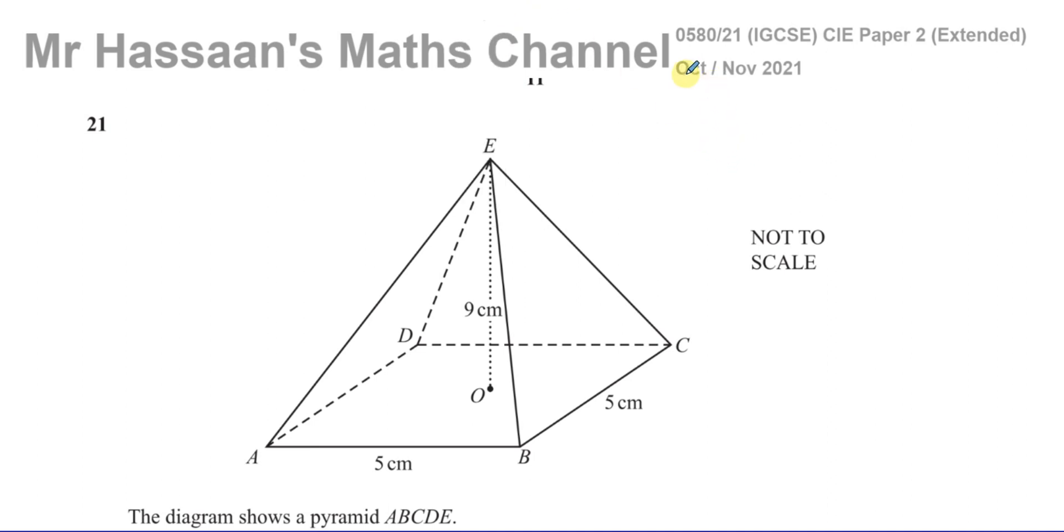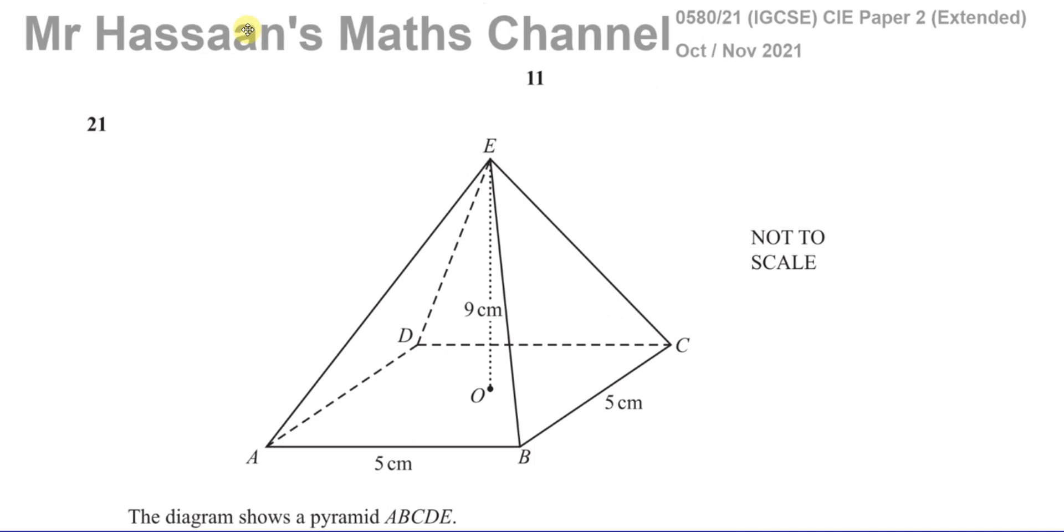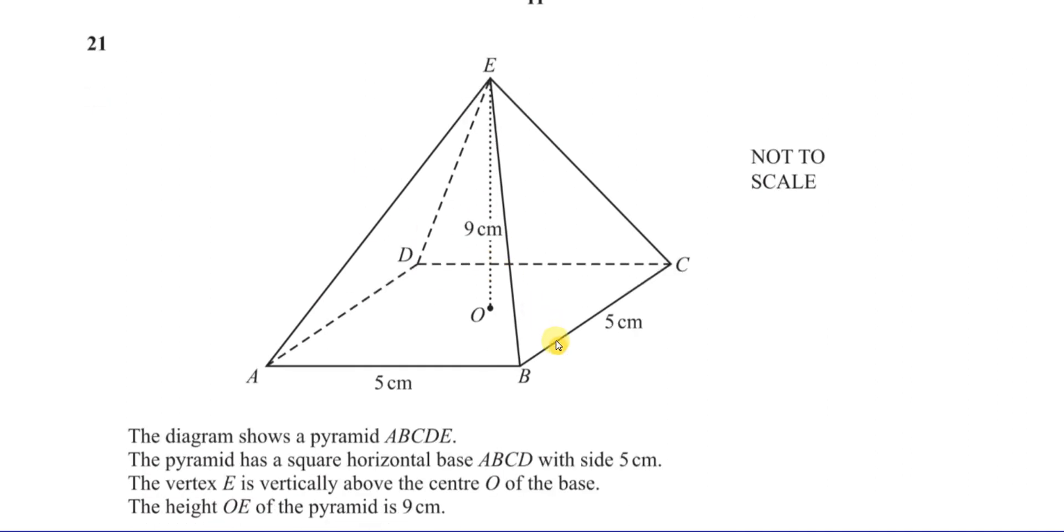This question is from the 0580 syllabus and is about pyramid ABCDE. The pyramid has a square horizontal base ABCD with side 5 cm. The vertex E is vertically above the center O of the base. The height OE of the pyramid is 9 cm.